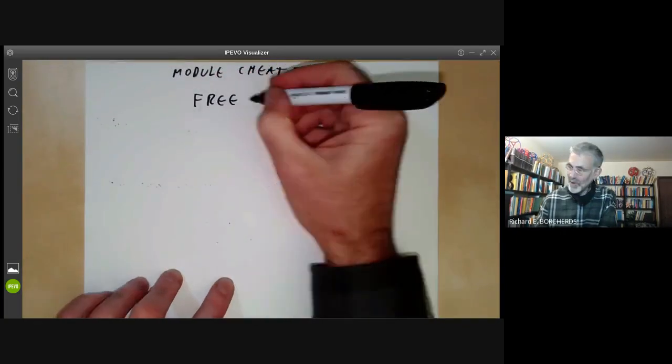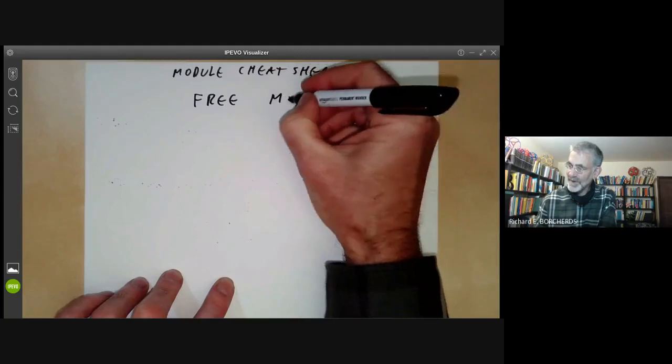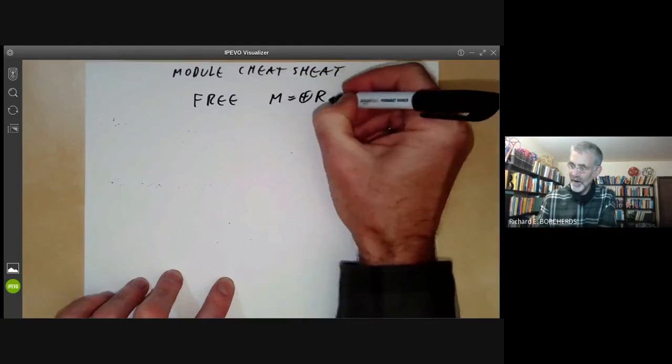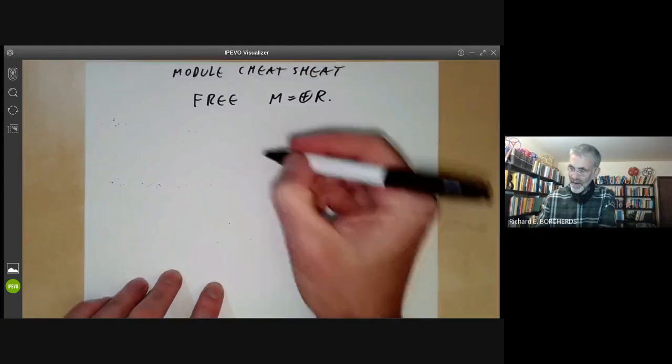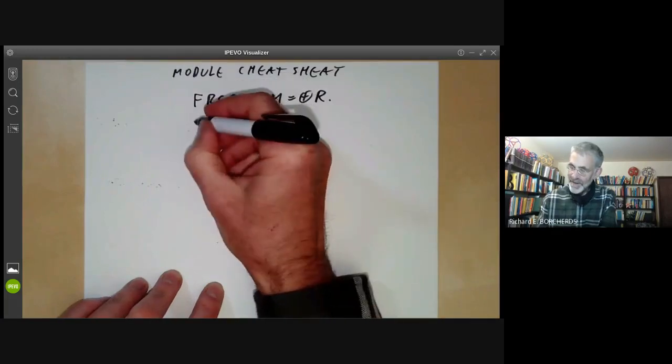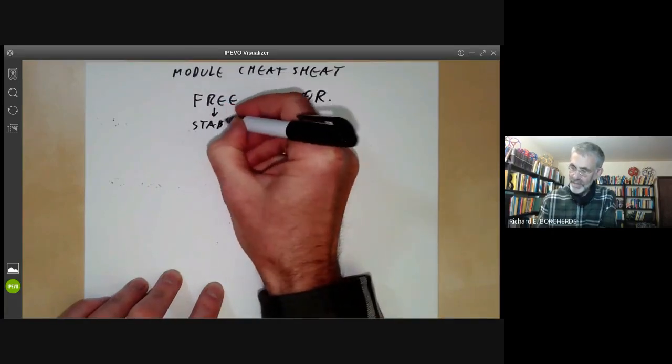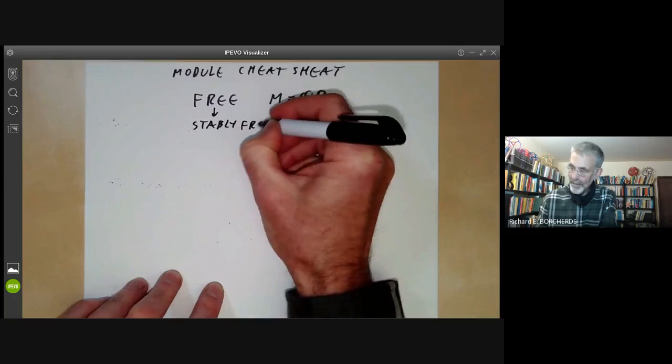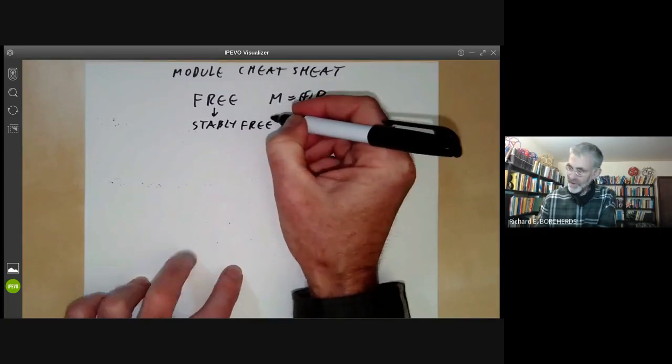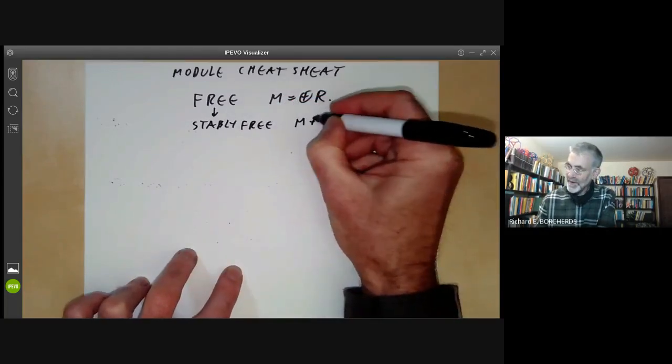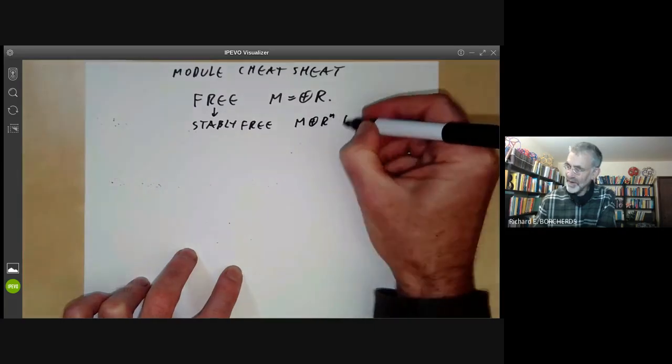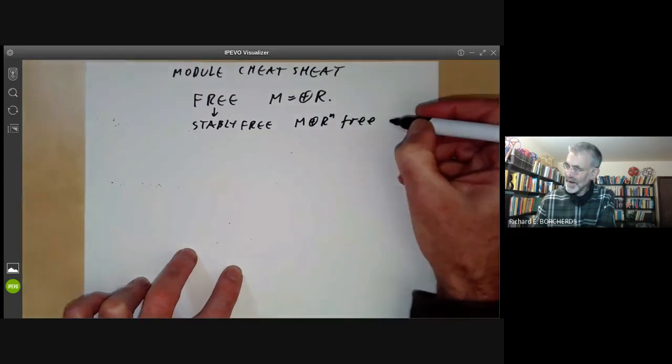So a free module is, of course, one just where M is the sum of copies of the ring R. Then we can get stably free. So stably free modules just mean that M plus R to the N is free, the sum N with N finite.